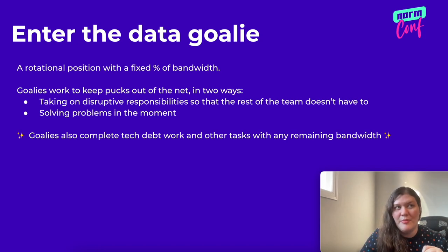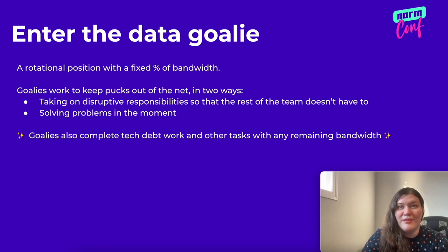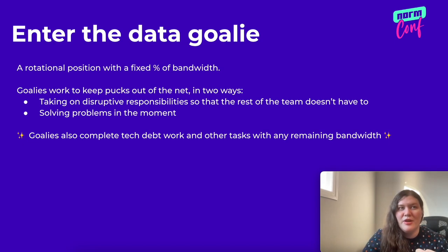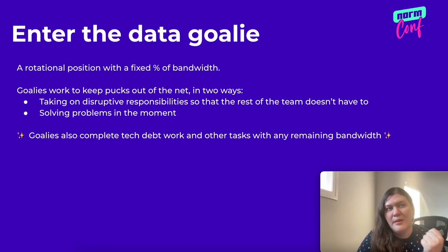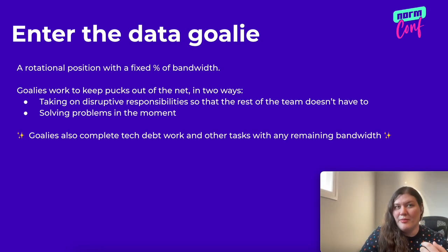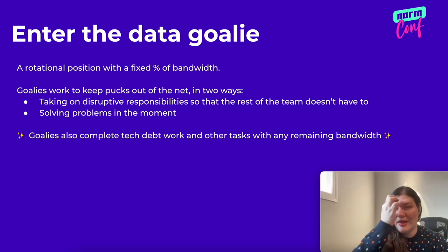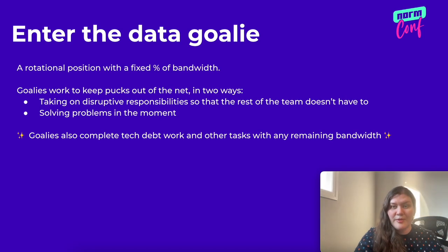The name data goalie comes from the idea that goalies keep pucks out of the net. This happens in a couple of ways. One is by taking the hit on anything disruptive — who triages critical pipeline failures, who answers questions from support, who jumps on that emergency that really needs someone to do something today. Goalies also try to fix problems in the moment if it's reasonable, so that they don't grow into bigger problems and fewer issues overflow onto the next goalie or the rest of the team.